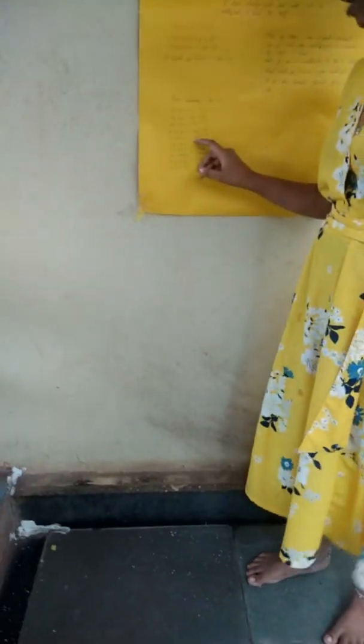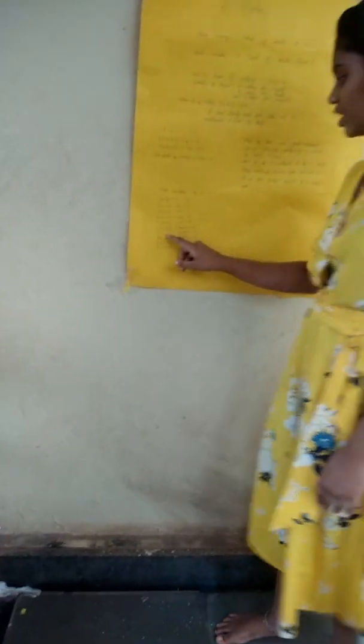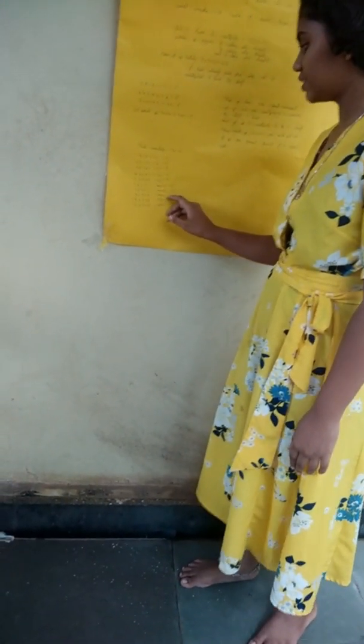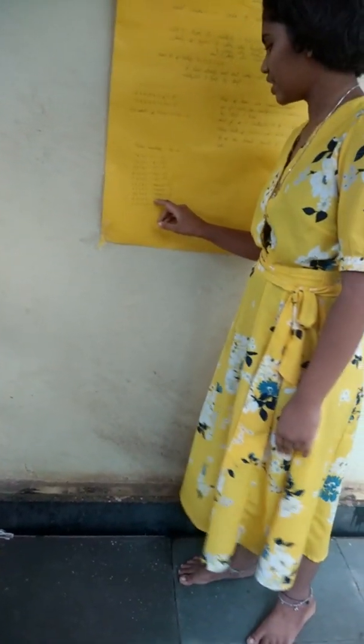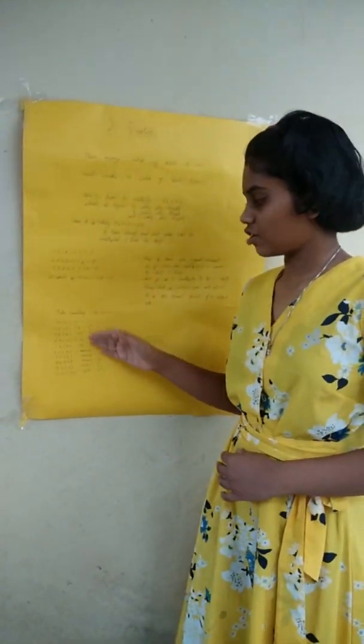I'm going to show you the cube numbers from 1 to 10. 1³=1, 2³=8, 3³=27, 4³=64, 5³=125, 6³=216, 7³=343, 8³=512, 9³=729, and 10³=1000. These are the first 10 cube numbers. In this table there are two patterns of cube numbers: first, addition of consecutive odd numbers, and second, prime factorization of cube numbers.